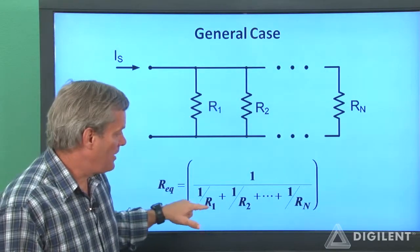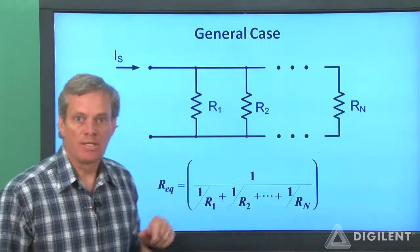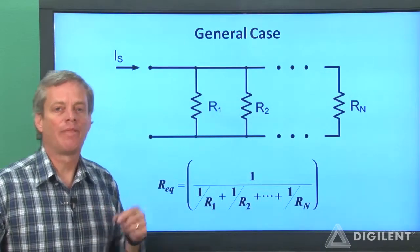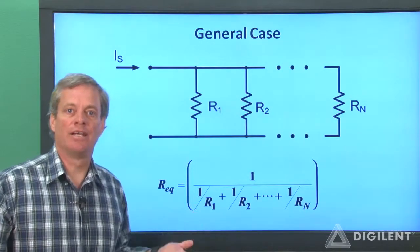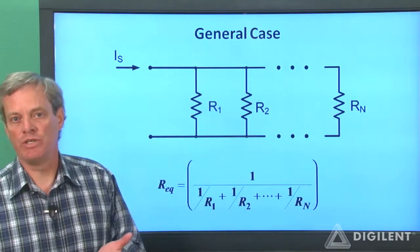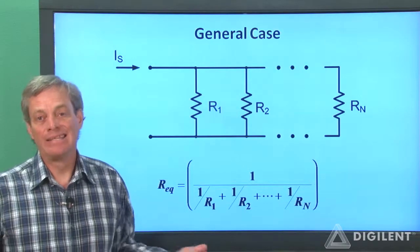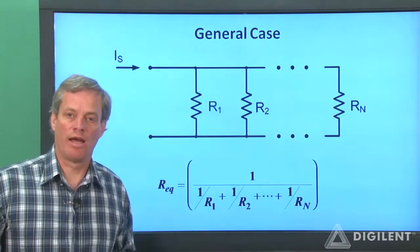We can add up the inverse of all the resistances and take 1 over that quantity. However, we don't have a form of this equation that's analogous to the second relationship we determined for the two resistors. Sadly, the math just doesn't work out.